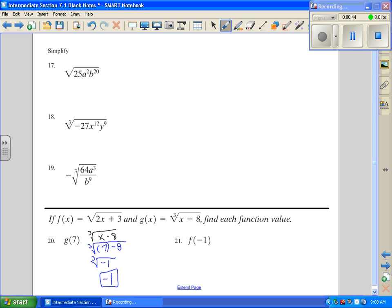Okay, and on number 21, if I want to find f at negative 1, you go to the f function, which is square root of 2x plus 3. And then everywhere x is at, I'm going to substitute negative 1 in place of x right there. So I'm going to put negative 1 there, and we'll leave everything else the same and solve this.